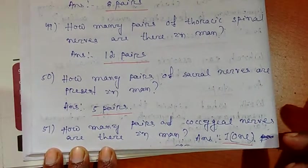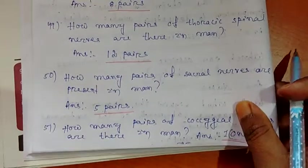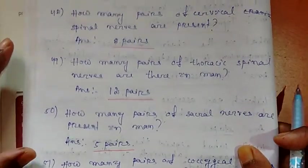So there are 32 pairs or 64 numbers of spinal nerves in human beings.